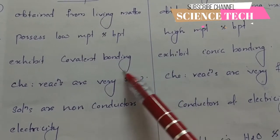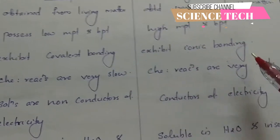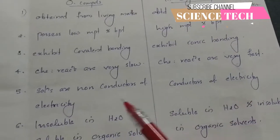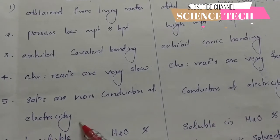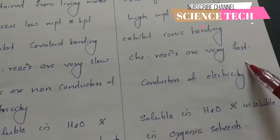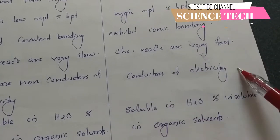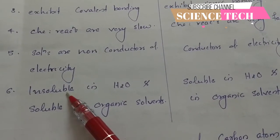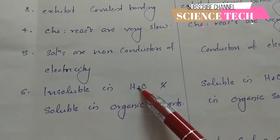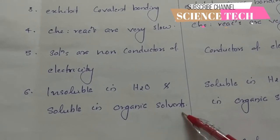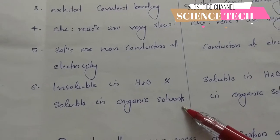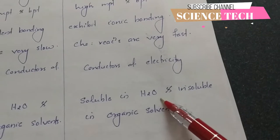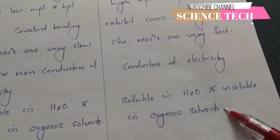Chemical reactions in Organic Compounds are slow, whereas reactions in Inorganic Compounds are fast. Organic Compounds are non-conductors of electricity, whereas Inorganic Compounds are conductors of electricity. Organic Compounds are insoluble in water but soluble in organic solvents like benzene and carbon tetrachloride, whereas Inorganic Compounds are soluble in water and insoluble in organic solvents.